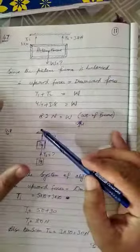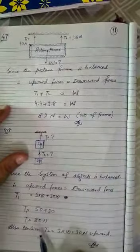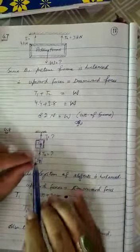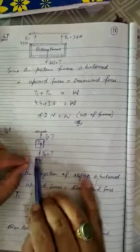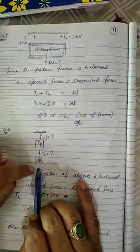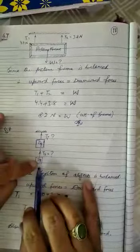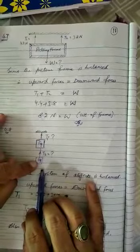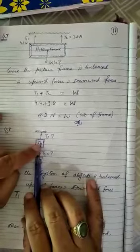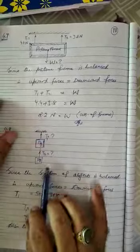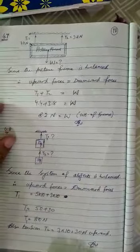Since this system is balanced, so 80 Newton force acting vertically downward, and the tension existing in the string in upper direction is same: 80 Newton, that is T1. But if you consider the tension existing in this below string, you will see that only one smaller mass is hanging vertically downward.